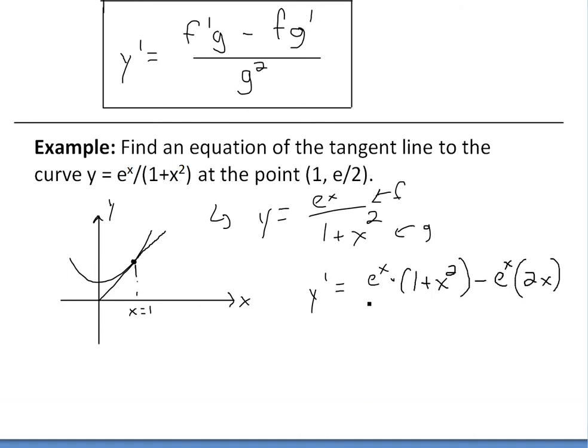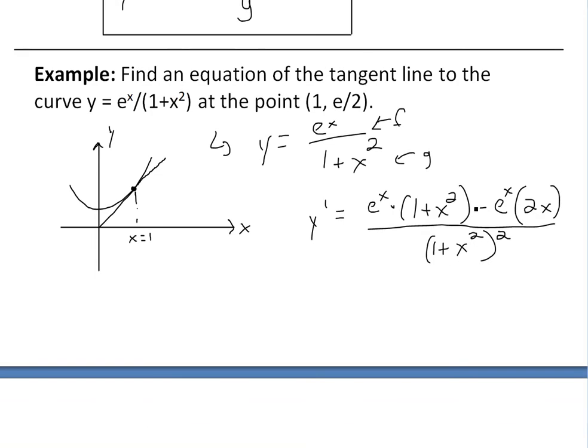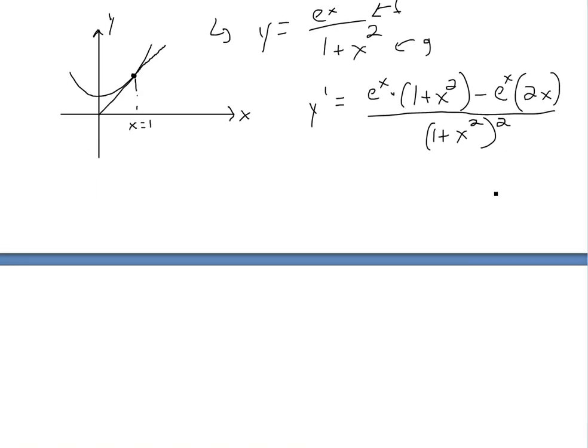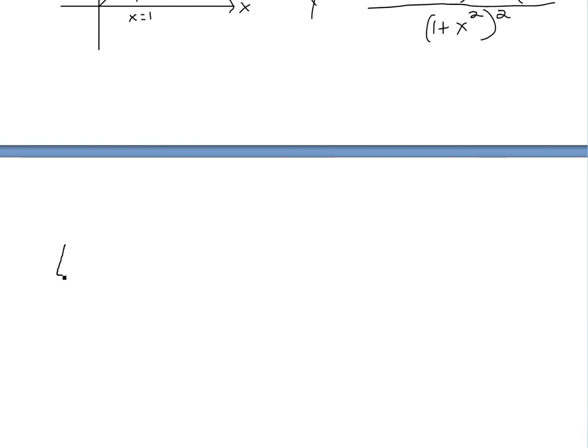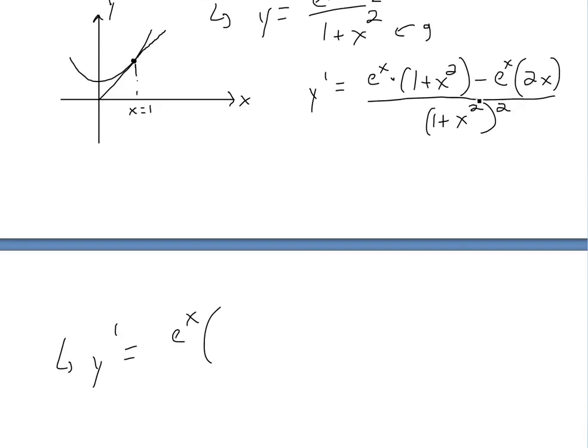And then all this divided by 1 plus x squared squared. We could simplify this further. We'll take the e to the x out. So we can actually write it as y prime equals e to the x, and then take it out. Just to make it a bit simpler, we can write it as, well, x squared—I'm going to rearrange it, so x squared on the left of it.